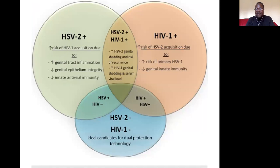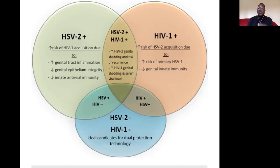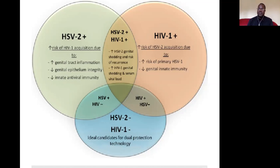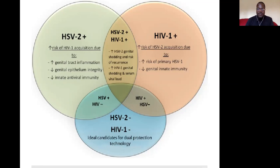HSV-2 is known to increase HIV acquisition through increased genital tract inflammation. When you develop HSV-2 infection, there will be local inflammation, which attracts inflammatory cells at the site of infection. Some of those inflammatory cells carry CD4 receptors — receptors for HIV — giving HIV a pathway to enter. HSV-2 also produces blisters and small ulcerative lesions that allow HIV to pass through.